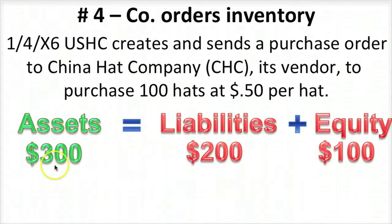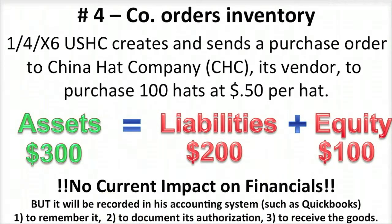The previous balance sheet showed $300 in assets claimed by the lenders and by the owners. At this point, since this was just an order, there's no current impact on the financials.